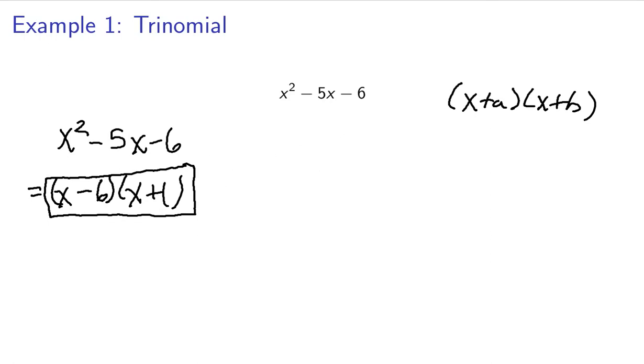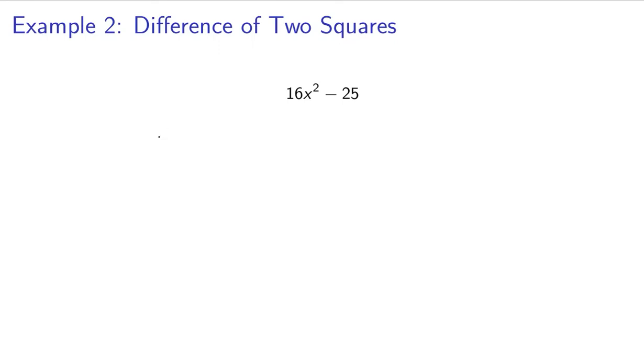So next, we'll have a difference of two squares. So remember that whenever we have something that looks like a squared minus b squared, that'll be the same thing as a plus b times a minus b.